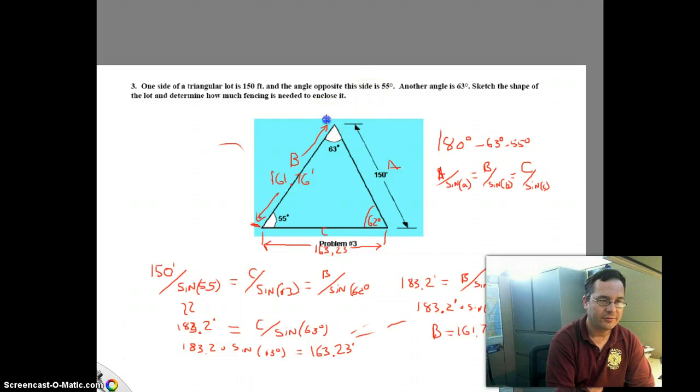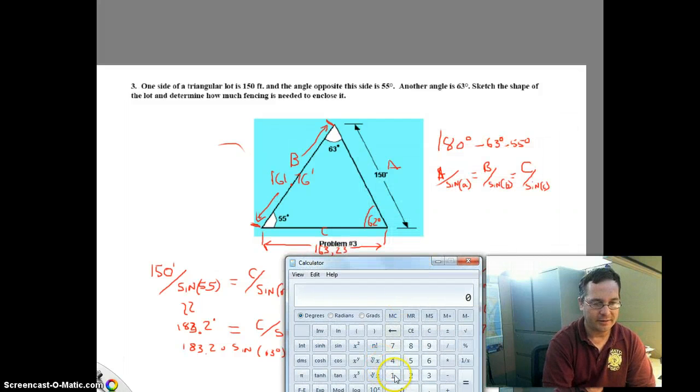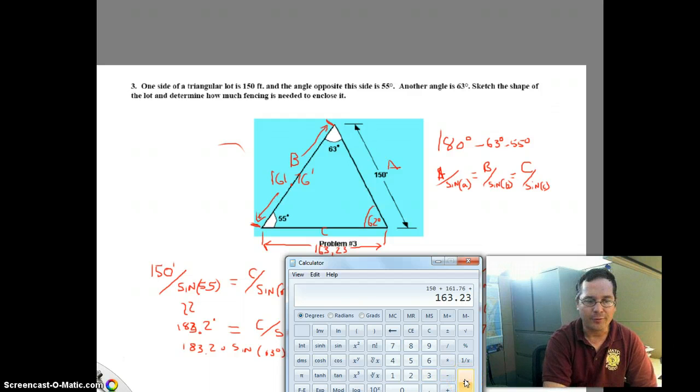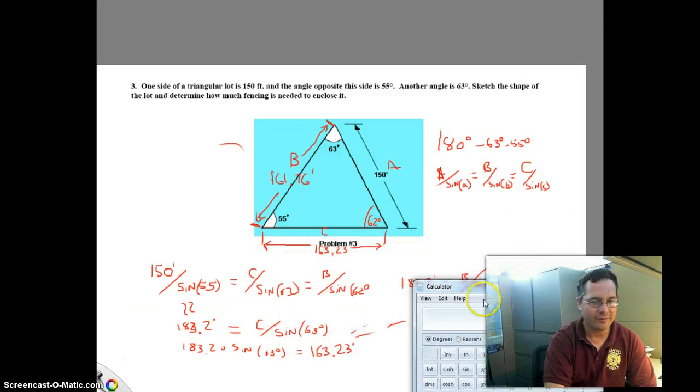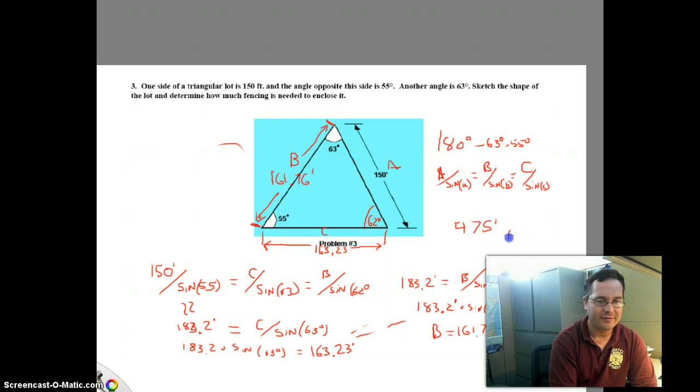The last part of the problem deals with how much fence would it take to enclose this, but that's simply a sum, and that's just the sum of these three sides. So if we pull up our calculator again, we'll clear out what we had previously. Side A had a length of 150. Side B had a length of 161.76. And side C had a length of 163.23. So if we add those three numbers up, we know it's going to be somewhere probably between 400 and 500, because 3 times 150 is 450. So 474.99. You buy fencing by the foot, so at the end of the day, our solution is we need about 475 feet of fence. That's our final solution.